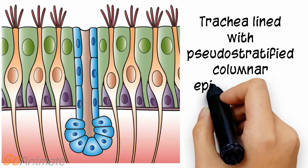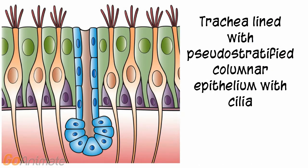The trachea is lined with ciliated pseudostratified columnar epithelium and mucus-secreting goblet cells. The cilia work to clean the respiratory tract by moving debris toward the pharynx.